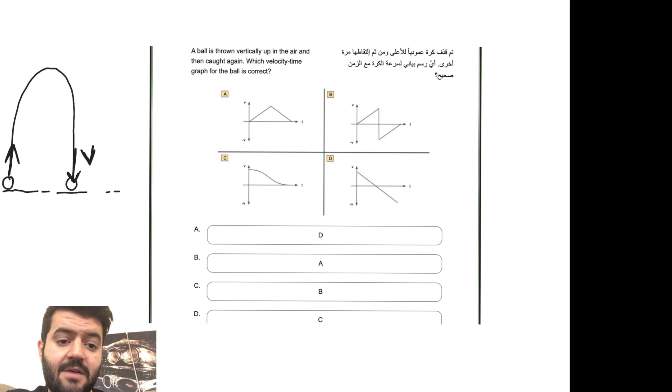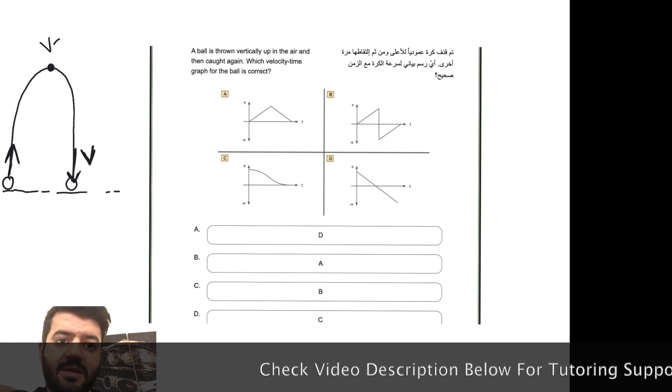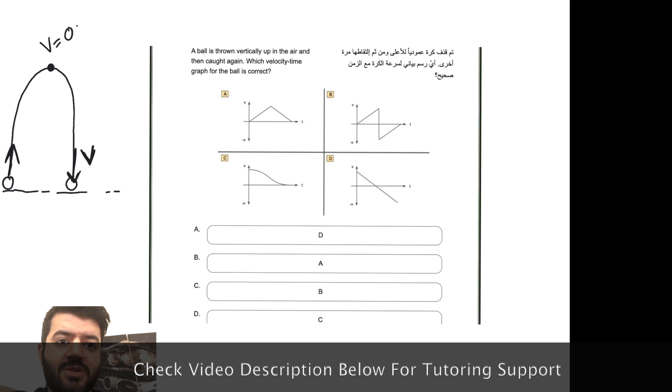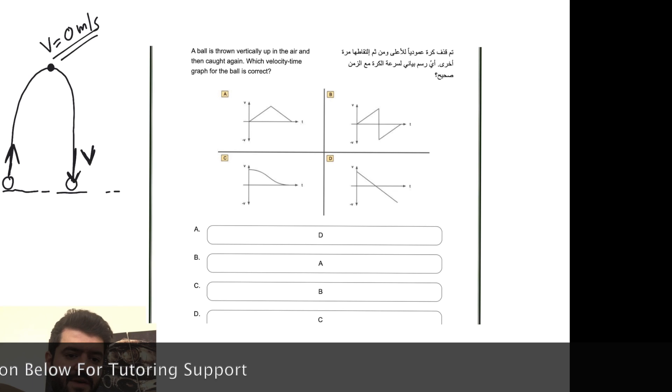Obviously we're going to have the velocity reversed so the direction will be negative in this case. One of the key characteristics of the projectile motion: once you get to the maximum height, always keep this in mind that the velocity is zero.